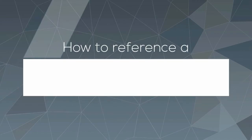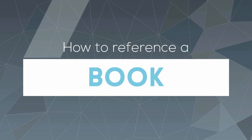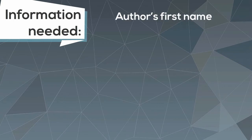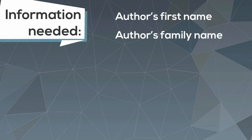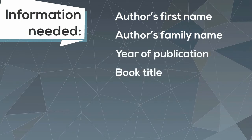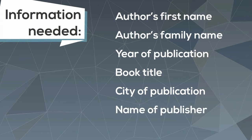Hello. In this video, you will learn how to reference information taken from a book in APA format. You will need to identify the following information: the author's first name, the author's family name, the year of publication, the title of the book, the city where the book is published, and the name of the publisher. You should be able to find this information on the cover and the first few pages of the book.